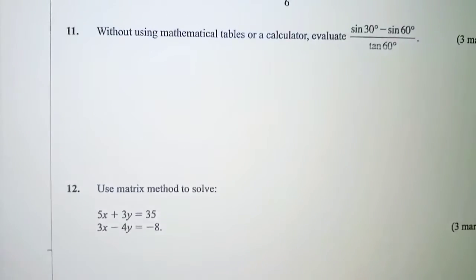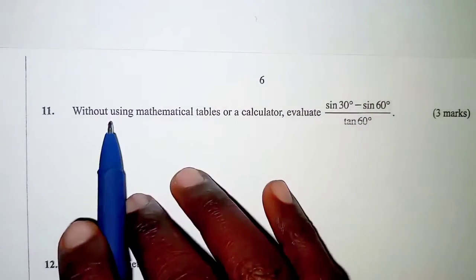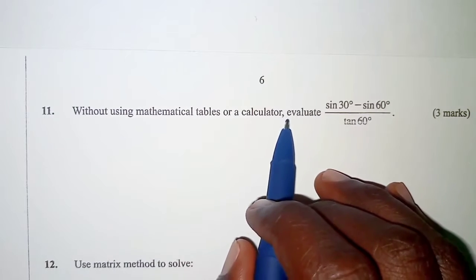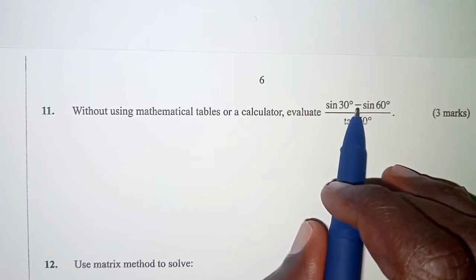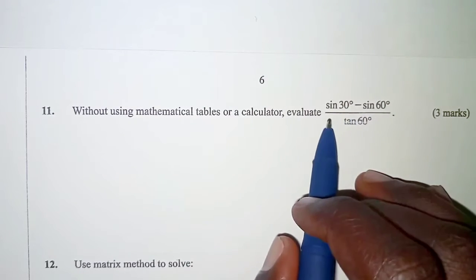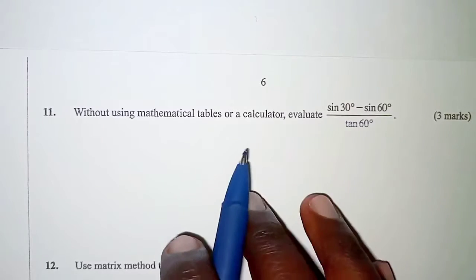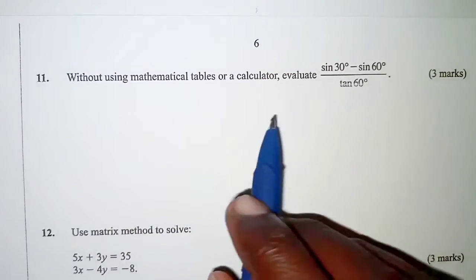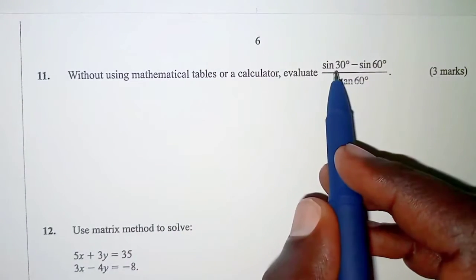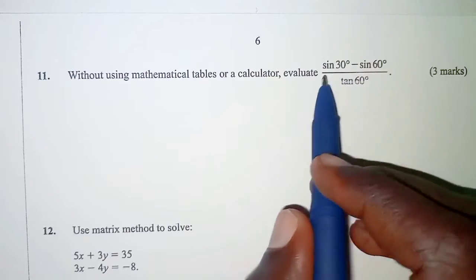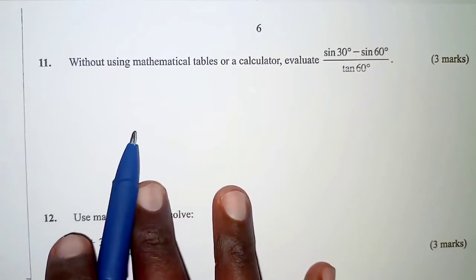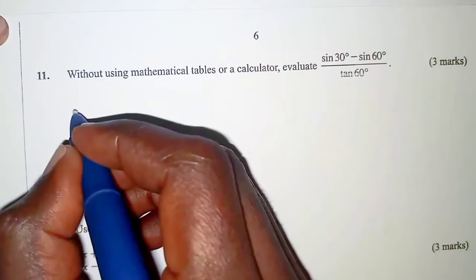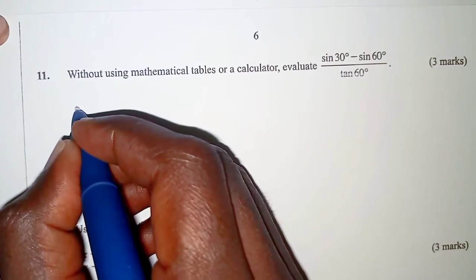So write to question number 11. Without using mathematical tables or a calculator, evaluate sine 30 minus sine 60 over tan 60. In this question we need to identify that 30 and 60 are special angles and therefore we are going to consider an equilateral triangle.